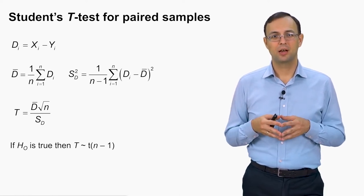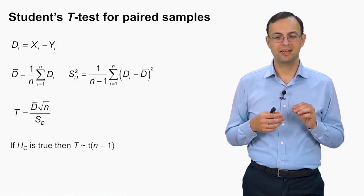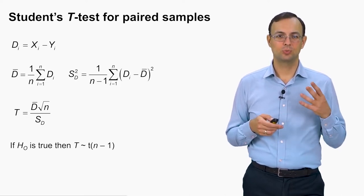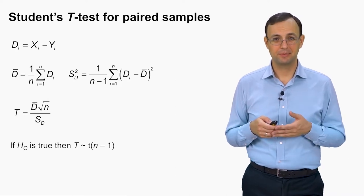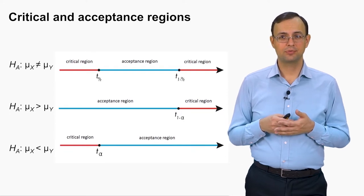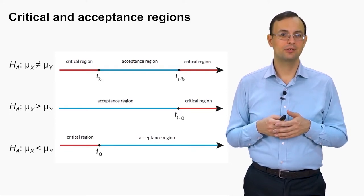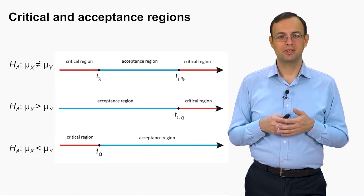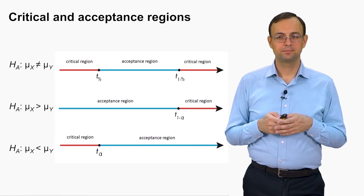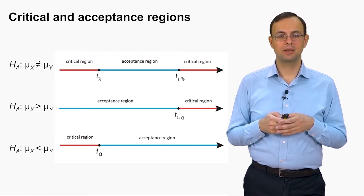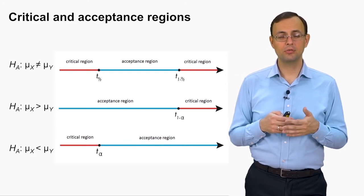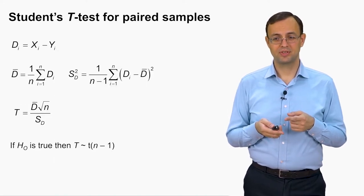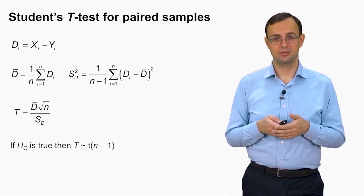This is the distribution already discussed when we dealt with confidence intervals — the same distribution. The quantiles of this distribution can be found in the same table. The configuration of critical and acceptance regions is the standard one, depending on the alternative hypothesis: left-tailed, right-tailed, or two-tailed. P-values can be calculated according to the standard formulas using the CDF of the Student's distribution with n minus 1 degrees of freedom.